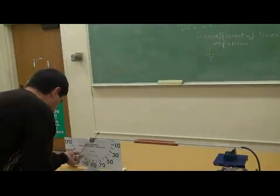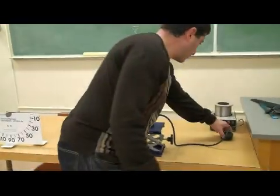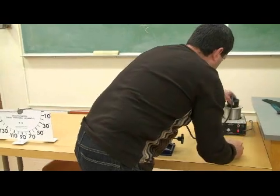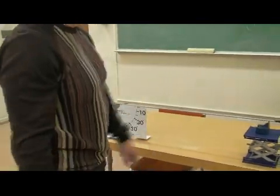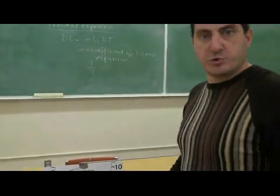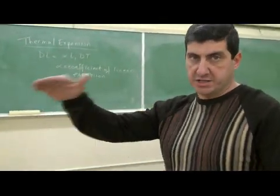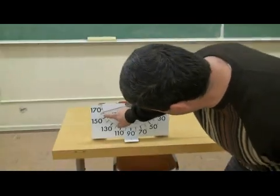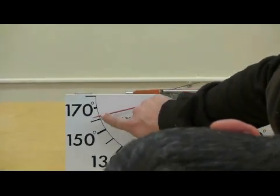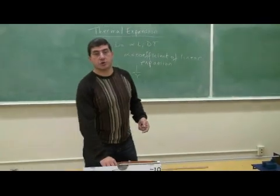Now let me place the pointer back at 180 degrees. Once I put it on top, I should not touch anything. Now I'm going to let it heat up and wait a little bit. The tube has heated up considerably. Steam's maximum temperature is 100 degrees Celsius, so the temperature won't go any higher. We can see the pointer has rotated about 15 degrees.